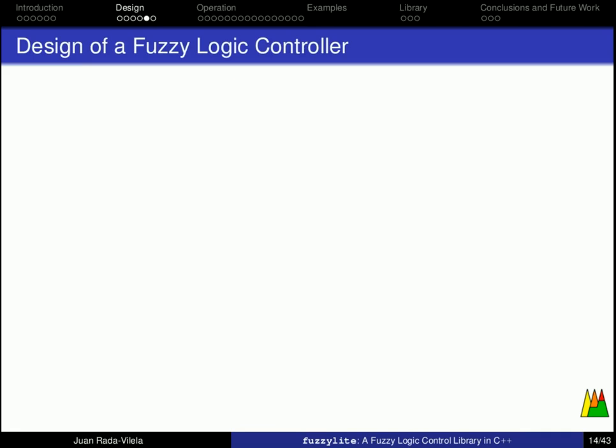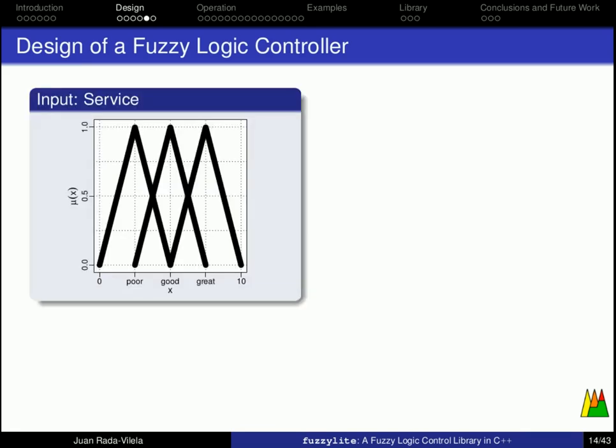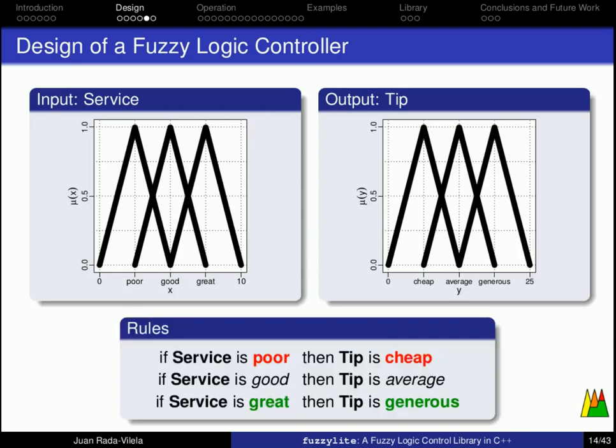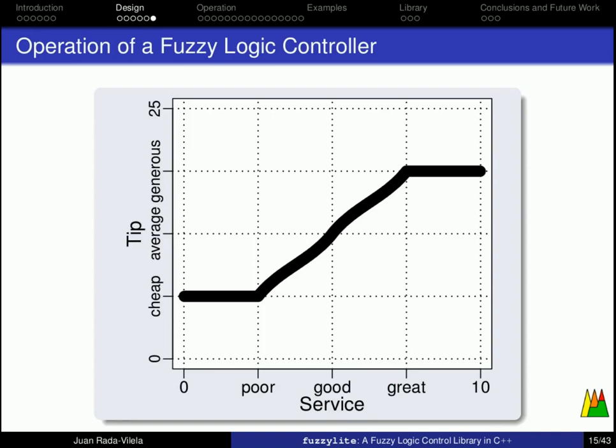The design of a fuzzy logic controller consists, then, on modeling the inputs and outputs as linguistic variables, and writing a set of rules that will provide the desired behavior. As such, the operation of this fuzzy logic controller will be as follows. For a poor service, the tip is going to be cheap, but as the service improves, we see that the tip also gets more generous.